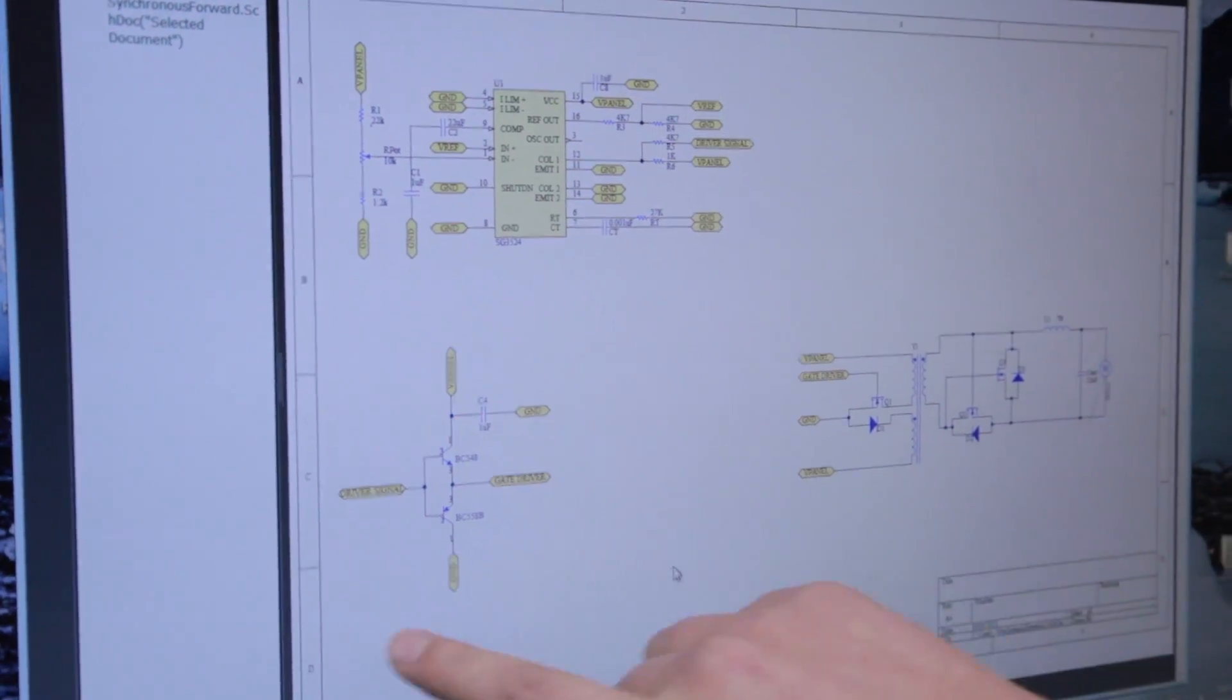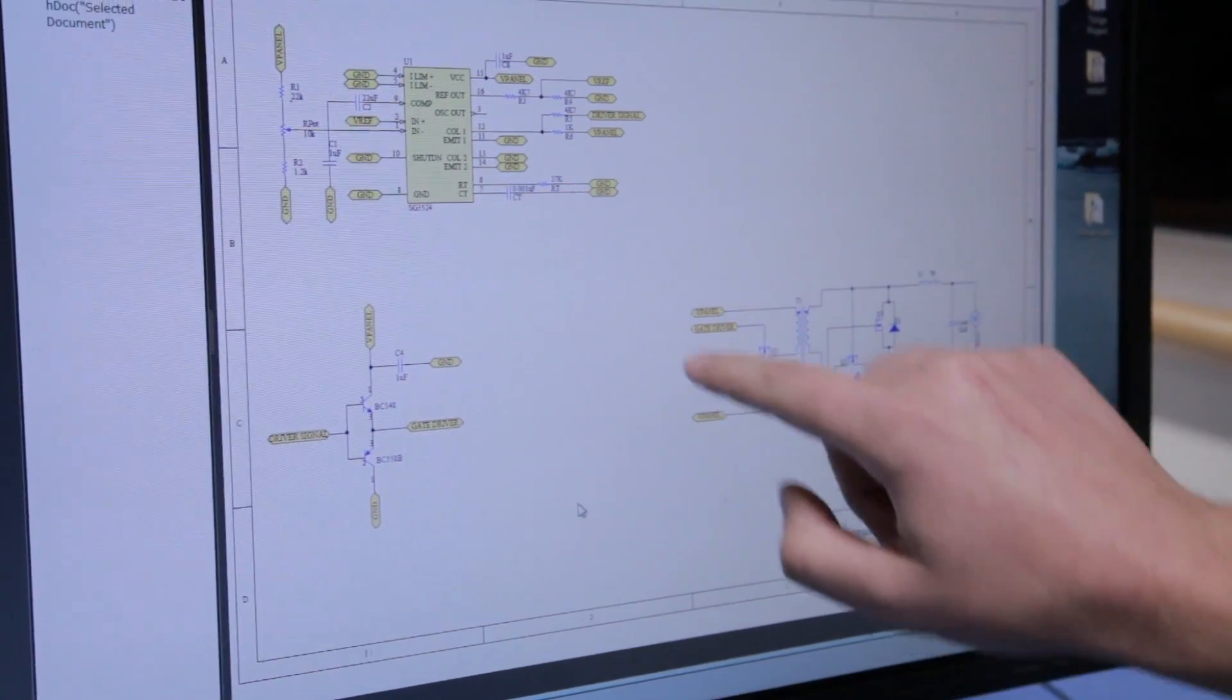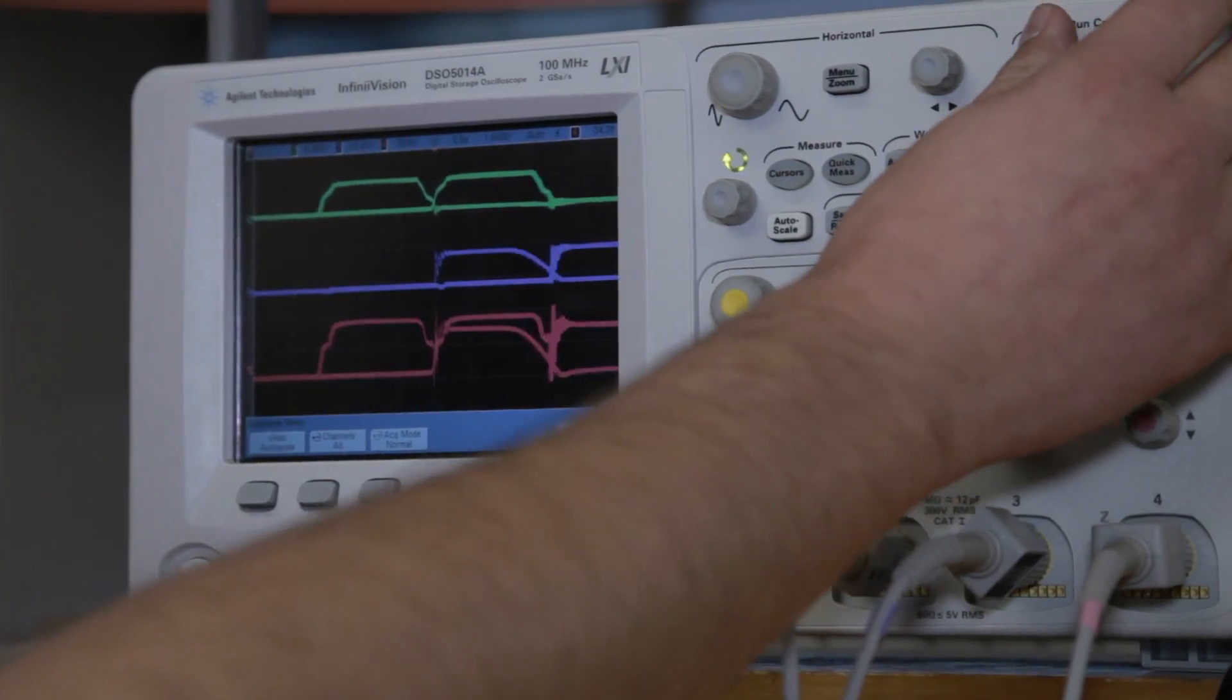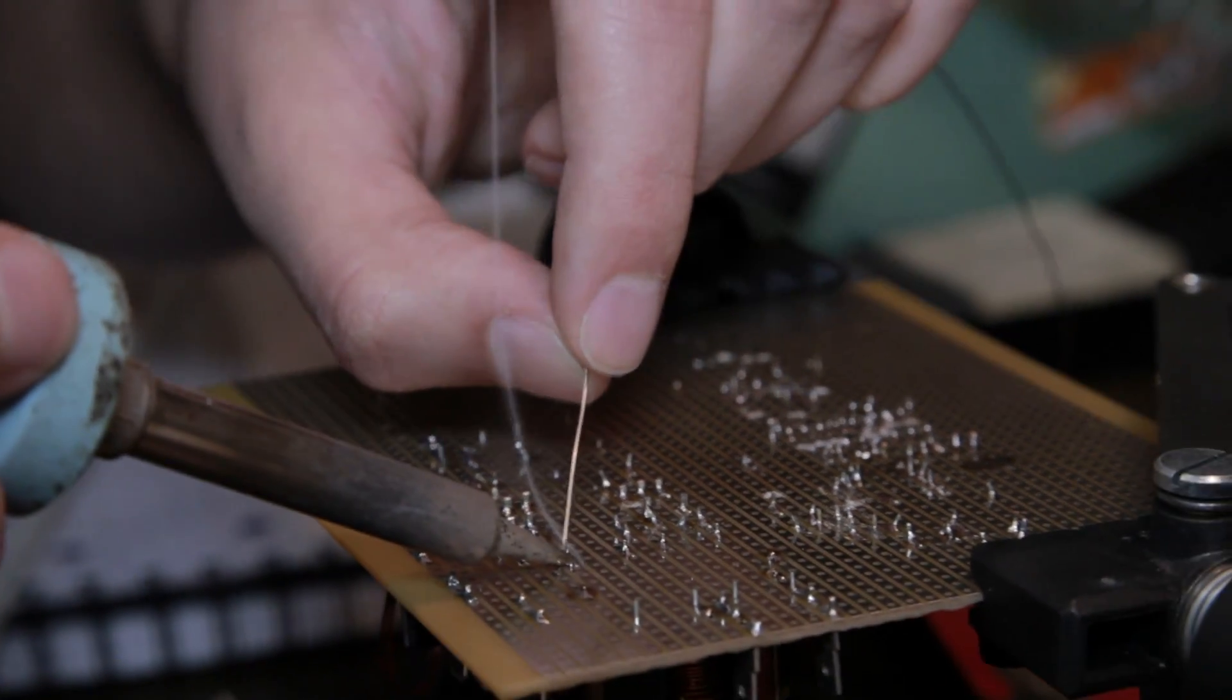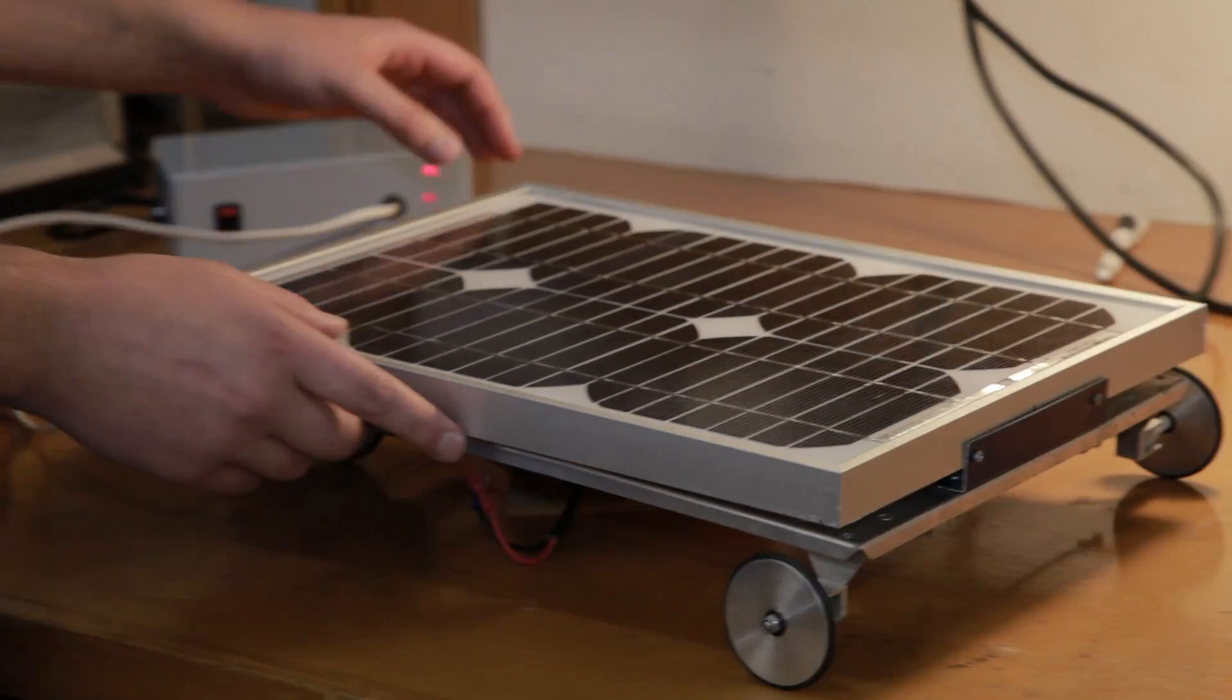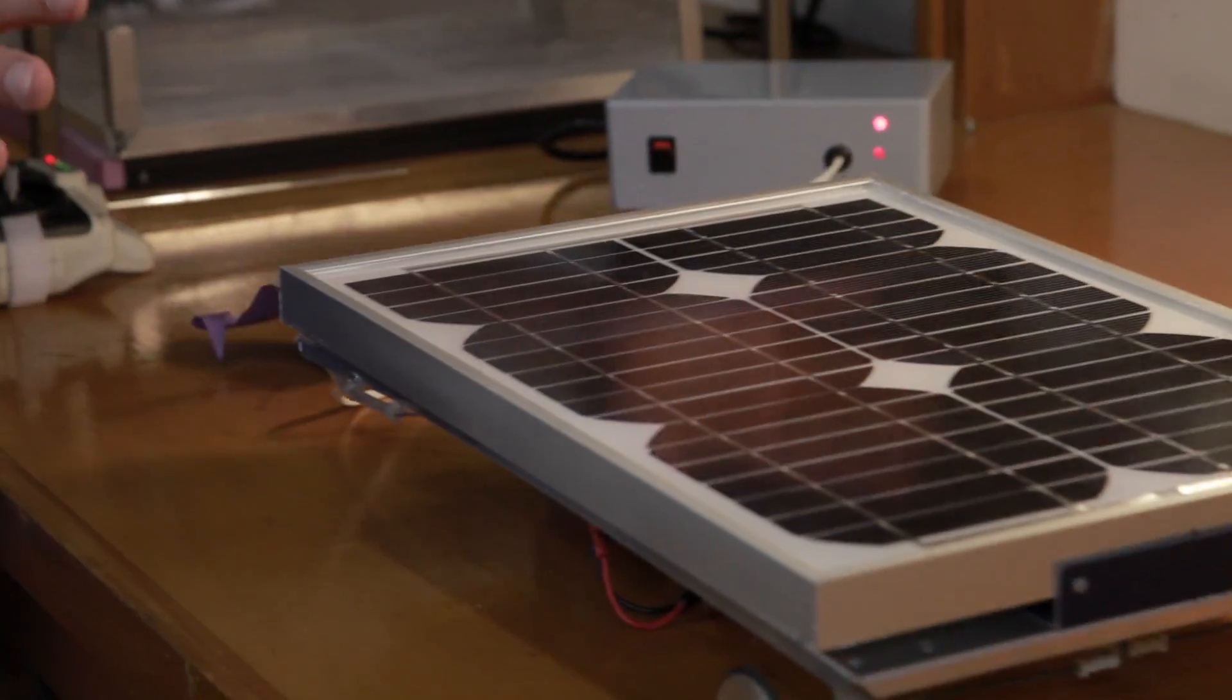To complete the design, initial modeling and calculations were done on the computer. Schematics were produced. The final circuit was built on the PCB and now we are looking forward to our final race, which is going to happen when we get some sun.